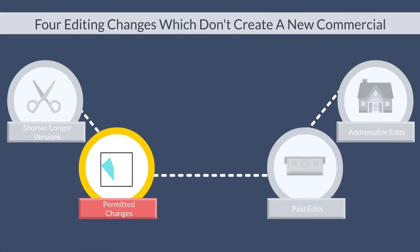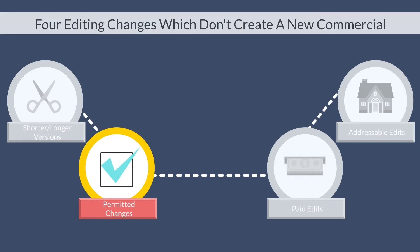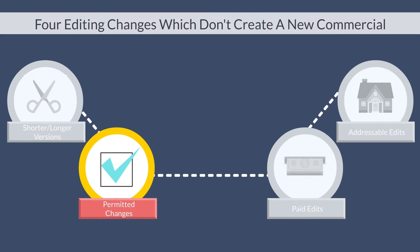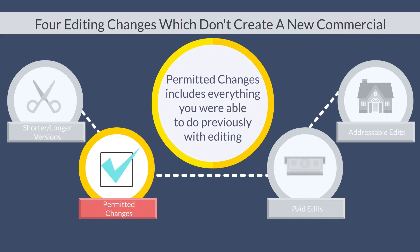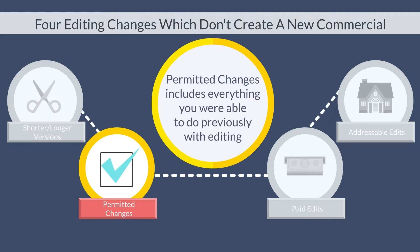Let's jump into the second type of change that does not constitute a new commercial – permitted changes. While the requirement to pay principal performers separate tag rates for each change made to the commercial remains a part of the new provisions, it's important to know that everything you were able to do previously at no additional cost with editing, you can still do today. Another important update in the 2022 commercials contract is more edits are now classified as permitted changes.